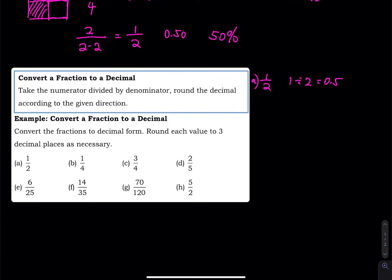1 divided by 2 equals 0.5. But 0.5 is only 1 decimal place. For 3 decimal places, you write 0.500 — keeping 3 numbers on the right-hand side of the decimal point.